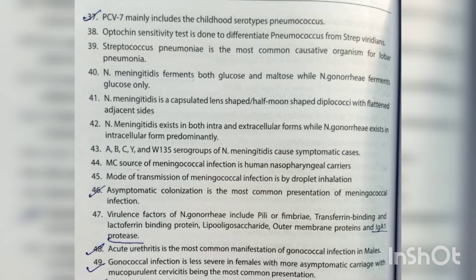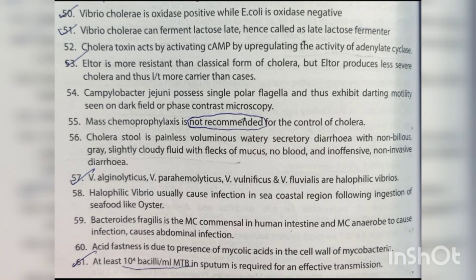Virulence factors of Neisseria gonorrhoeae include pili/fimbriae, transferrin-binding and lactoferrin-binding proteins, lipooligosaccharide, outer membrane proteins, and IgA1 protease. Acute urethritis is the most common manifestation of gonococcal infection in males. Gonococcal infection is less severe in females, with most being asymptomatic carriers; mucopurulent cervicitis is the most common presentation.